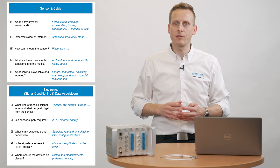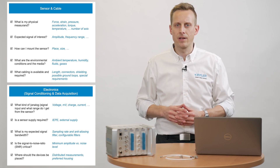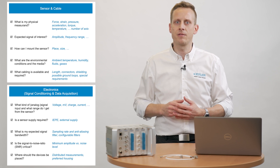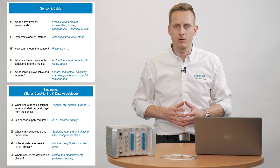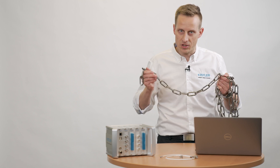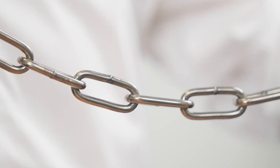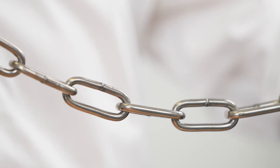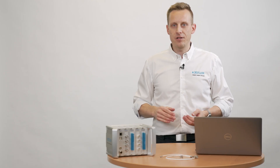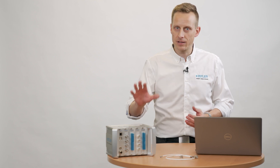As you see, there are a lot of questions to clarify while selecting a measuring chain. I hope this checklist helps you to find the right components. And keep in mind: a measuring chain is like a traditional chain — it is only as strong as its weakest link. In case you want to know more about sensors or other Kistler measuring equipment like Kidak, just reach out to your local Kistler contact.